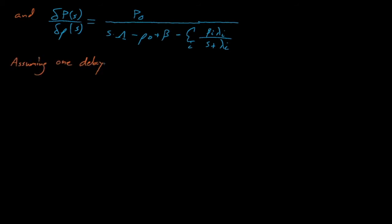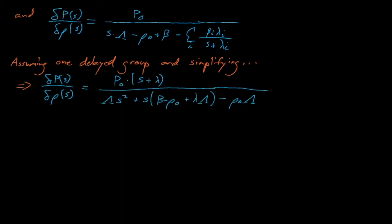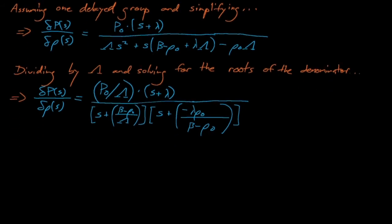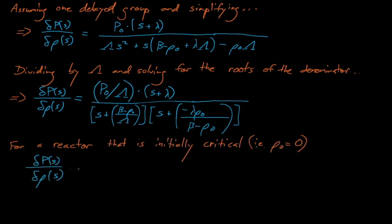Next, we can simplify this expression by assuming that our system has one delayed group, and we can solve for the approximate roots of the characteristic equation for our transfer function using the quadratic formula, which gives us this equation. Lastly, our transient responses generally assume that the reactor starts out in a critical configuration, which means that rho naught is generally equal to zero, which gives us this expression for the common form of the reactor transfer function.